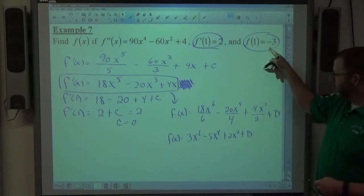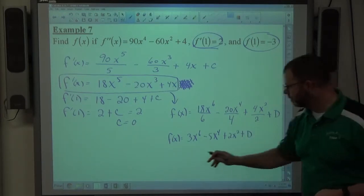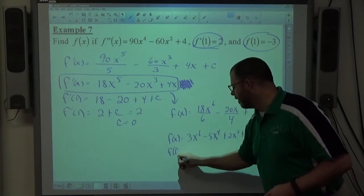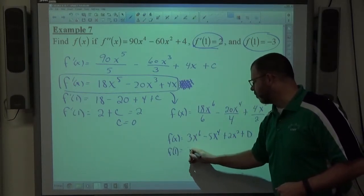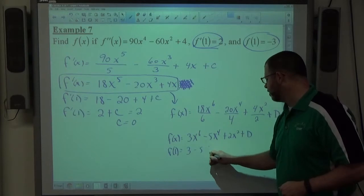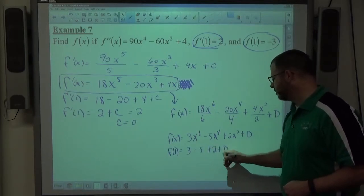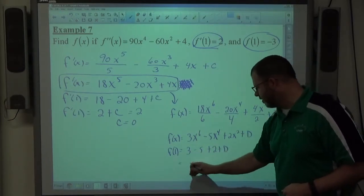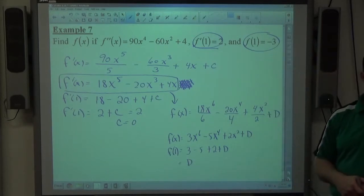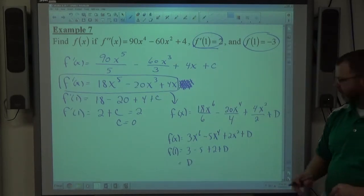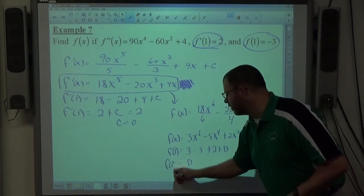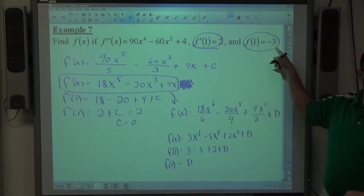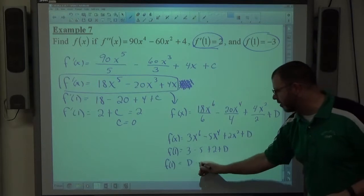And what we know is f of 1 equals negative 3. f of 1, in the case of this, is going to be 3 times 1 minus 5 times 1 plus 2 times 1 plus d. That makes d. The 3 and the 2 is 5 minus 5 is 0 plus d makes d. So f of 1 is equal to d. f of 1 also equals negative 3, which simply means that d must equal negative 3.